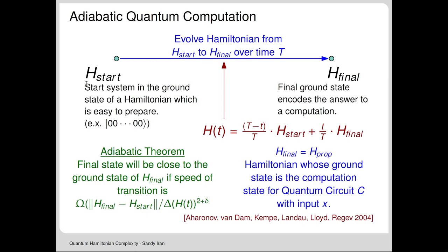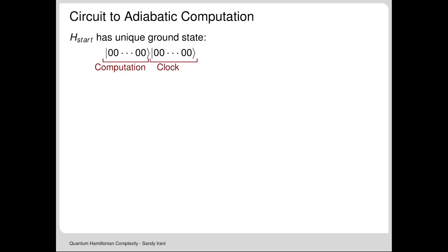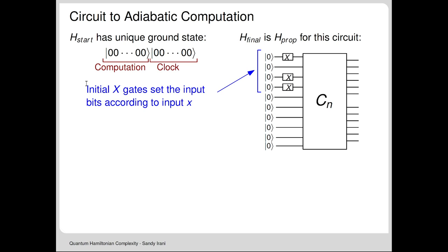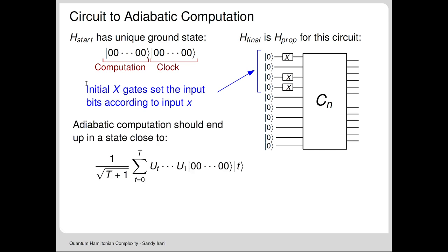In this case, there's no notion of a witness—we just want to take a circuit with an input and simulate it. H_start has a unique ground state of all zeros. The initial state of the circuit is all zeros except where we encode our classical input, and we want to execute the circuit. The adiabatic computation should end up in this history state. Without loss of generality, we can encode the input into the circuit by having X gates at the beginning—so assume the input is all zeros.